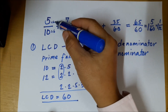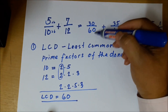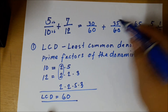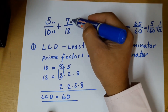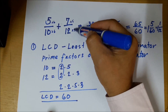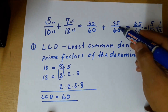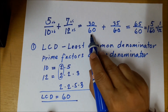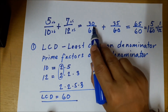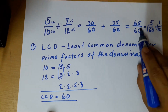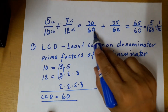To get 35, we multiply 12 by 5 to get 60, so we also multiply the numerator 7 by 5, giving us 35. Now we have the same denominators, so we can add the fractions: 30 plus 35 equals 65, and we just copy the denominator 60 — we don't add the denominators.